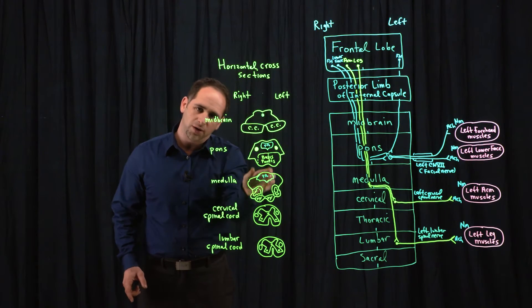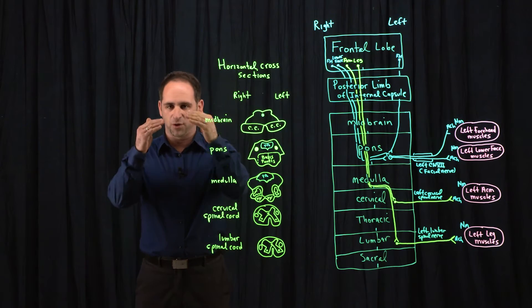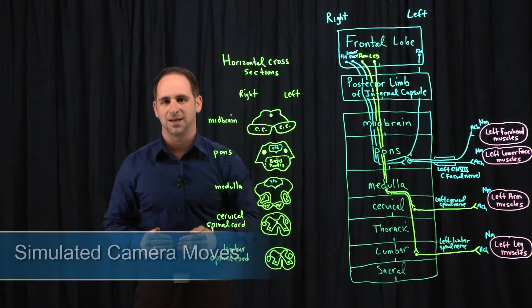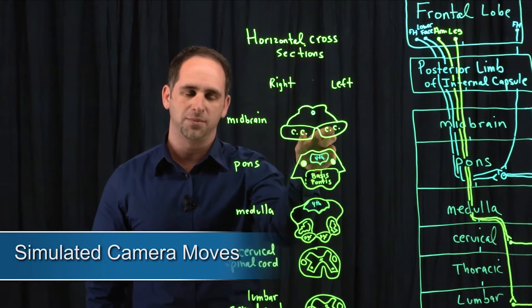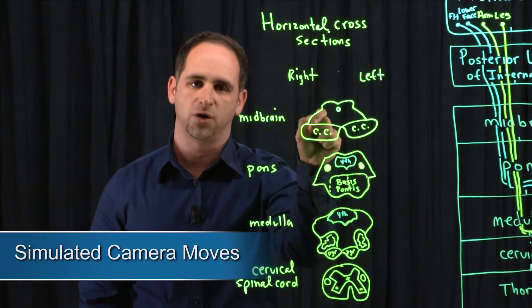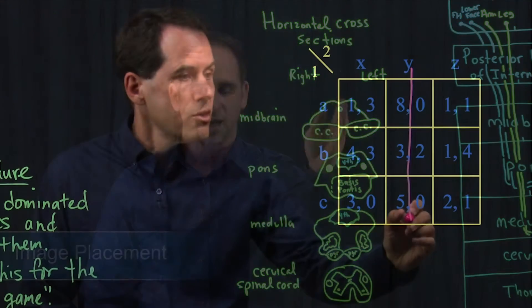The ventral part of the brainstem is where the upper motor neurons descend down through. So the ventral midbrain is called the cruce cerebri, abbreviated here CC.